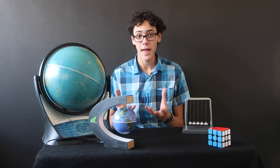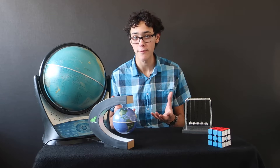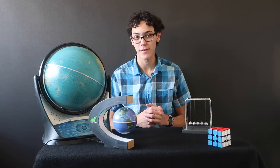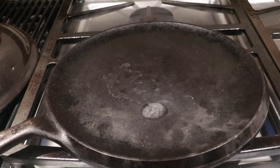Johann Gottlob Leidenfrost, a German doctor, was the first to document his observations of the Leidenfrost effect back in 1756. He noticed that if a surface was hot and you dropped water on it, the water would instantly boil away. But if the surface was very hot, the water would form tiny bubbles that would glide on the surface.